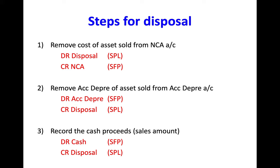The second component is to remove the accumulated depreciation of the asset sold from the accumulated depreciation account in the statement of financial position. Accumulated depreciation has a credit balance in the SFP, so to remove an asset from it you need to debit accumulated depreciation and credit the same disposal account we looked at in part one.